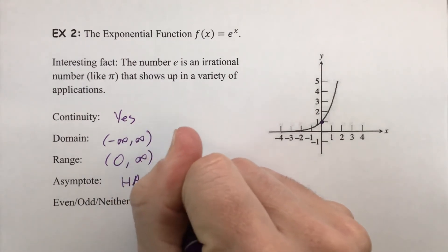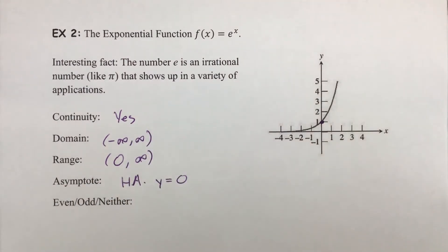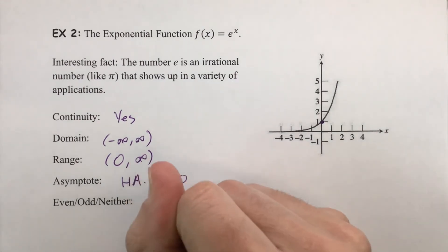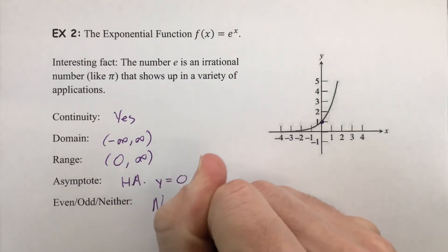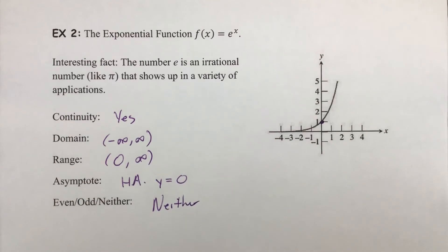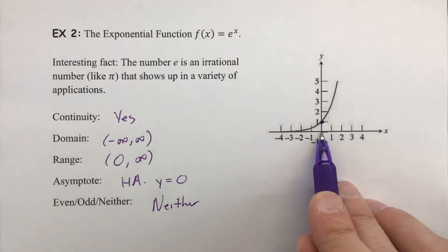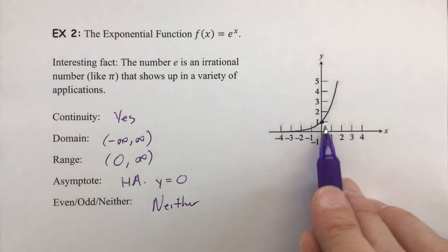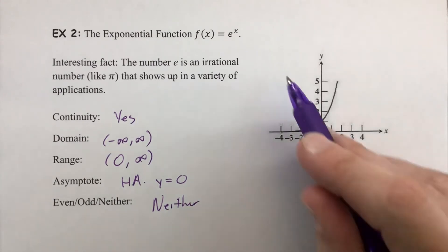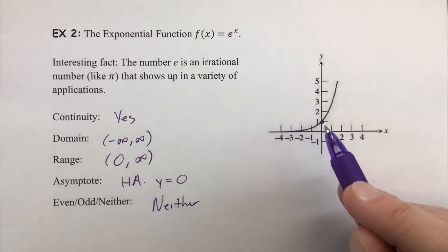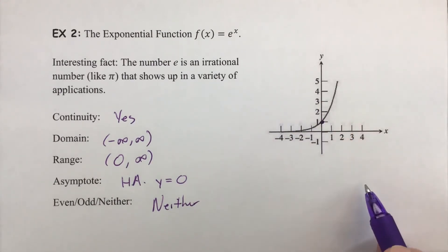Is the exponential function even, odd, or neither? It is neither. It is not symmetric over the y-axis, and if we place a point of symmetry at the origin, all points on the graph sit to one direction — there is nothing to match on the other side. So it cannot be an odd function either.